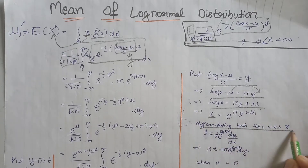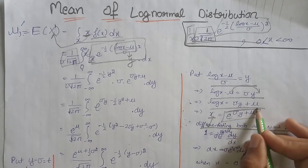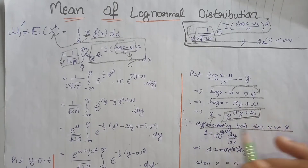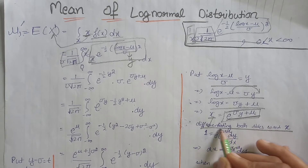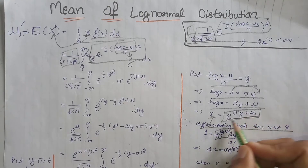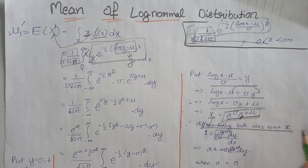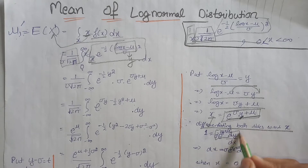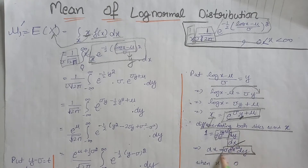Differentiating both sides with respect to x, the left side gives 1. On the right side, differentiating e^(σy + μ) gives σ · e^(σy + μ), and since this term is in terms of y but we are differentiating with respect to x, we write dy/dx. From here we get the value of dx equal to this expression.